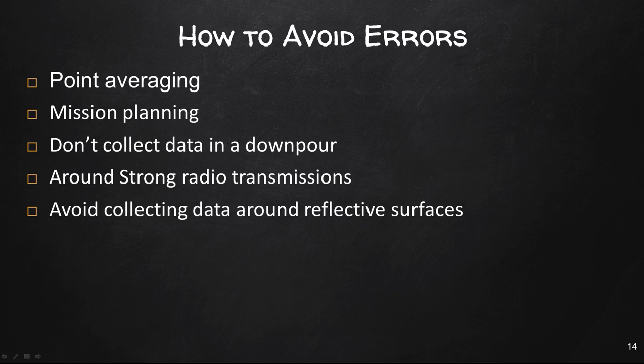So how to avoid these areas? Point averaging, meaning collecting more and more points for a position. Mission planning, which we'll talk about, which is about understanding when is going to be the optimal time to go out and collect GPS data. Don't collect data in a downpour, this causes some interference, around strong radio transmissions as I said. Avoid collecting data around reflective surfaces. In addition to avoiding all these things is a good idea if you want to get as accurate and precise data as possible.